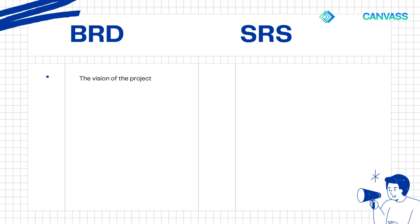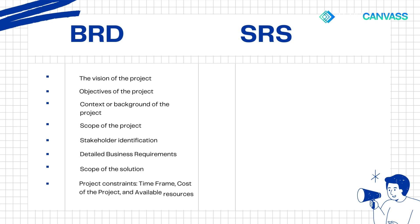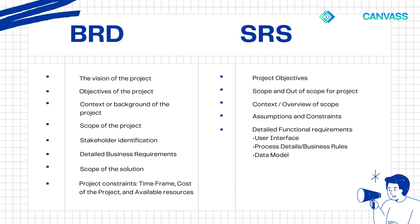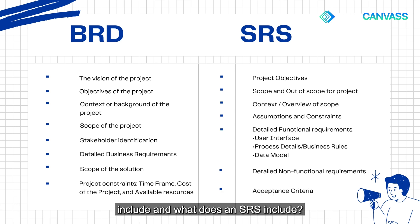Just to summarize: the BRD typically has the vision of the project, objectives, context or background, scope, stakeholder identification, detailed business requirements, scope of the solution, project constraints, timeframe, cost, and available resources. These are some of the key elements of a typical BRD document. The SRS will have project objectives, scope and out-of-scope elements, context and overview, assumptions and constraints, detailed functional requirements including user interfaces, process diagrams, business rules, data models, and so on. It will also have detailed non-functional requirements and acceptance criteria. These are the detailed descriptions of what a BRD includes and what an SRS includes.